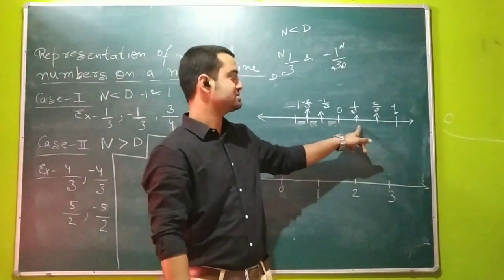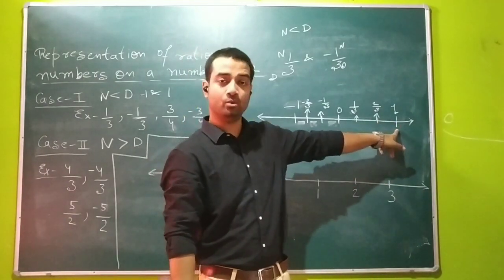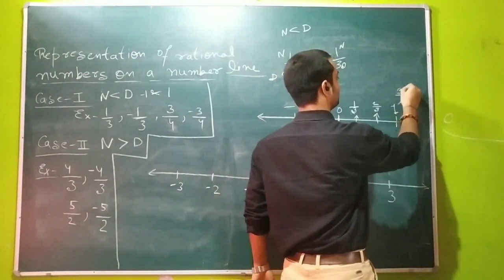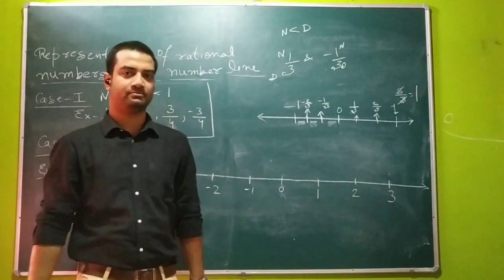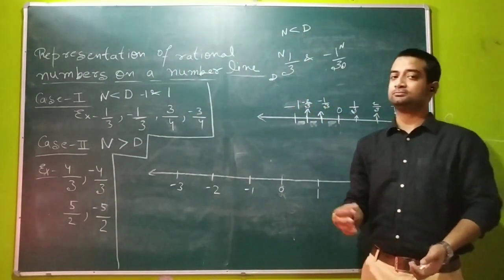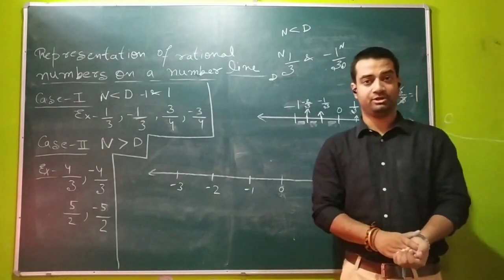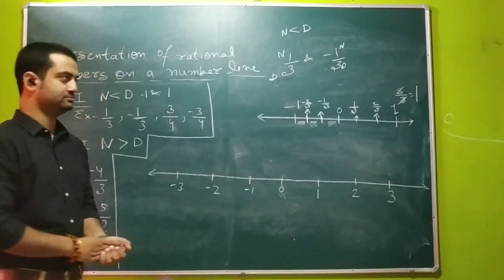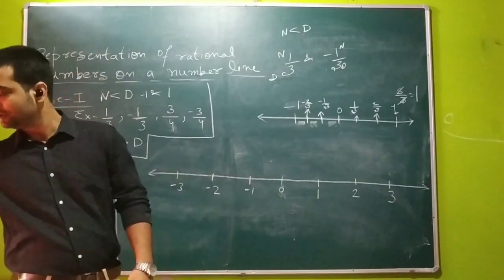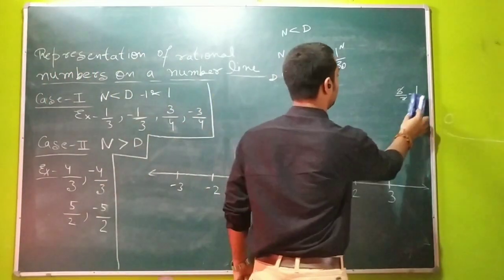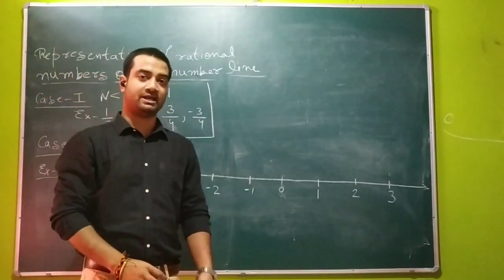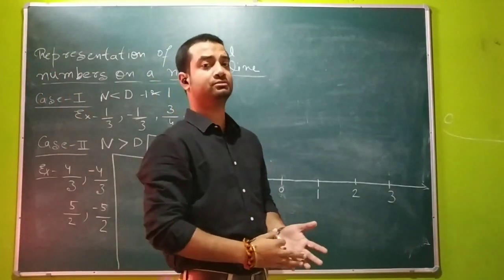Now, if this is 0, this is 1 upon 3, this is 2 upon 3, then how do we get 1? Since it is the third part, it will be 3 upon 3, which ultimately gives us the answer 1. So that was the first case — how to draw any rational number when the numerator is less than the denominator. Now let's have a look at the second case. When the numerator is greater than the denominator, before finding where the rational number lies, first we have to convert it into mixed form.